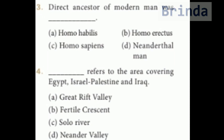Third question: the direct ancestor of modern man. Options are Homo habilis, Homo erectus, Homo sapiens, and Neanderthal man. The answer is Homo sapiens. The direct ancestor of modern man was Homo sapiens.